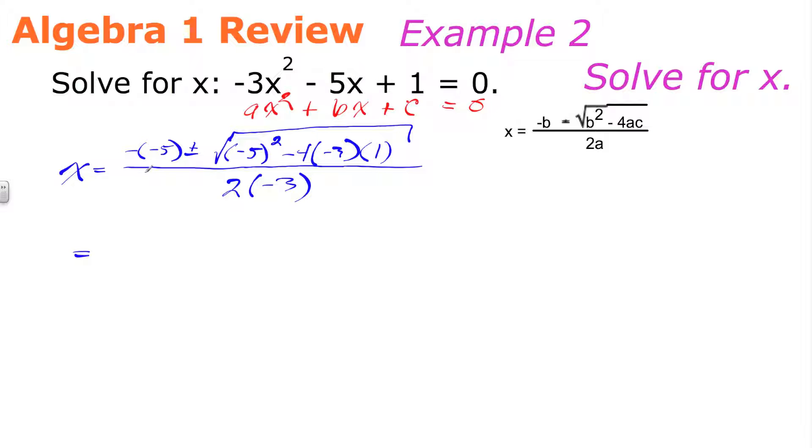Negative, the opposite of -5 is a positive 5. Bring down the plus or minus. Now, it's time to work underneath the radical. -5² is 25. Here, again, we're going to treat this as a negative. -4 × -3 is positive 12. And positive 12 × 1 is a positive 12. So, we'll write that down as +12.